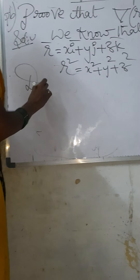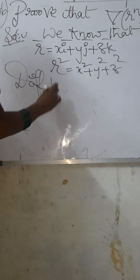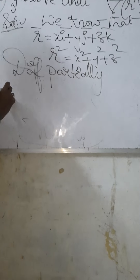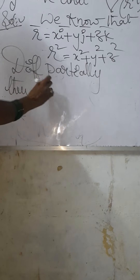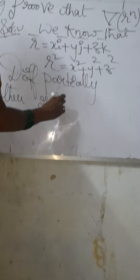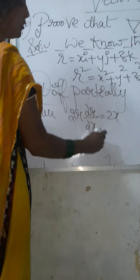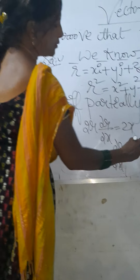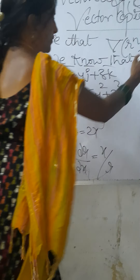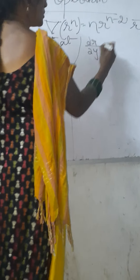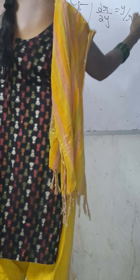Differentiating partially with respect to x, we get 2r times dou r by dou x equals to 2x. Therefore, dou r by dou x equals to x by r. Next, dou r by dou y equals to y by r. Dou r by dou z equals to z by r.